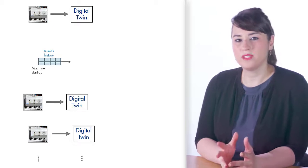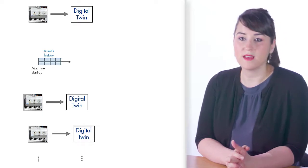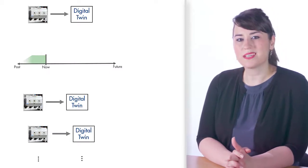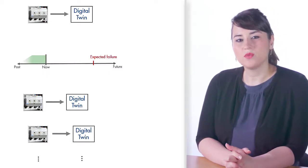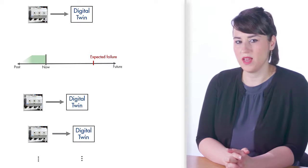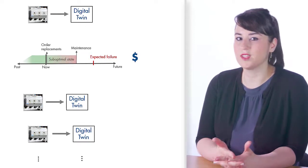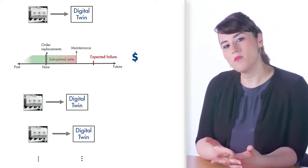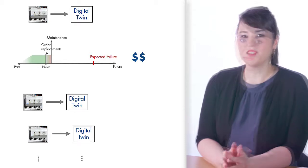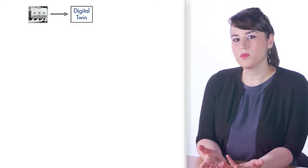Being able to monitor the whole fleet using digital twins also brings other advantages in terms of planning operational events and improving maintenance strategies. Imagine a situation where one of the pumps is expected to fail soon. Using digital twins, you can assess how this will affect the efficiency of the fleet and what it will cost you. Based on this analysis, you can either order replacements and run your pump in a suboptimal state until the new parts arrive, or pay more for shipping to get the parts immediately and schedule maintenance as soon as possible. Digital twins not only help you understand the history of their assets, but they also help you with future planning.